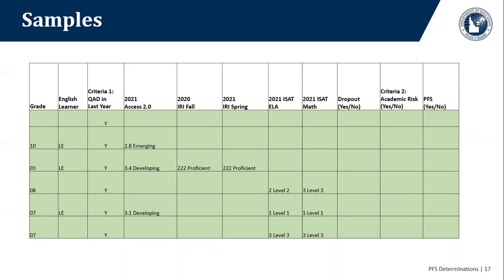When I look at the next student, a 10th grader, this student is not proficient in their language assessment. Therefore, having a move in the last year and being less than proficient on a state assessment, this student would be marked as academically at risk and therefore PFS.